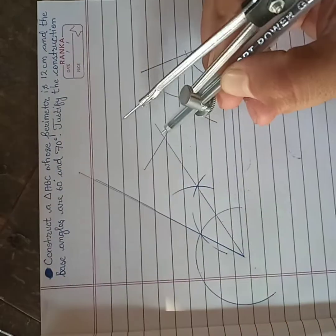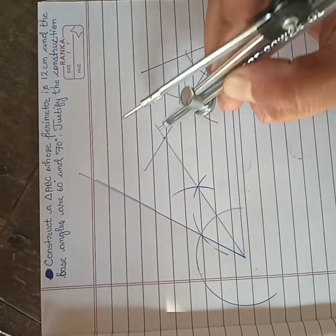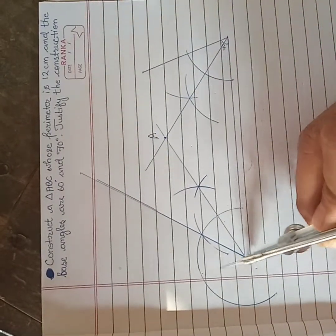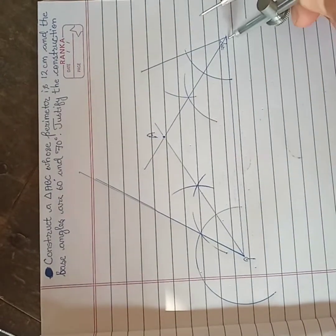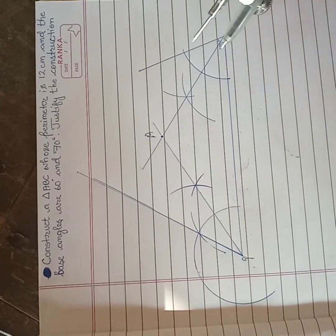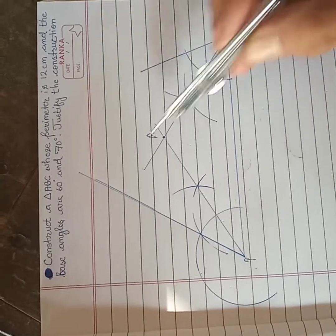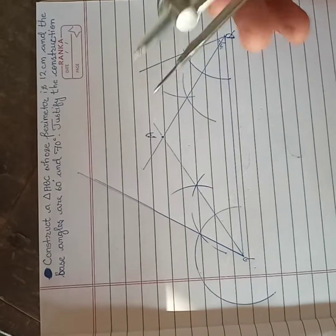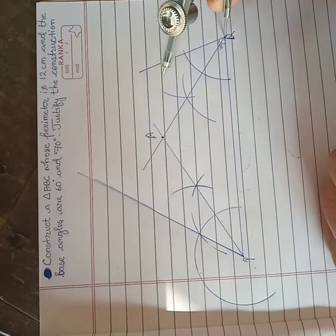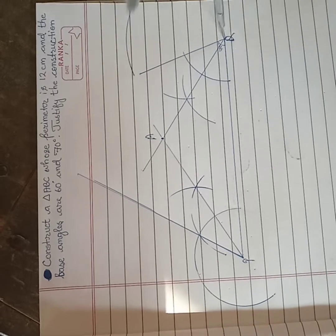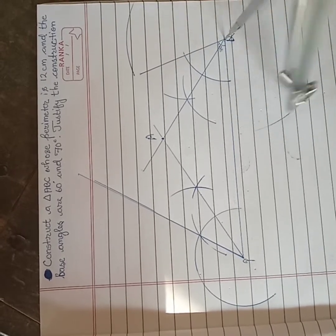This intersecting point will be called A. This is P and this is Q. Now this line should be bisected and this line should also be bisected, so we will take more than half on this side and this side also.